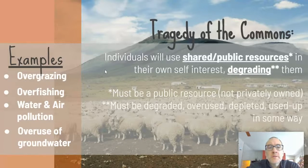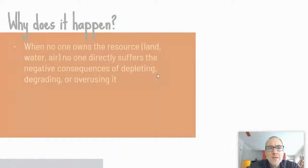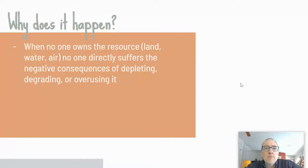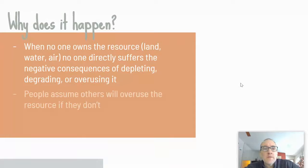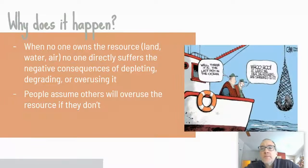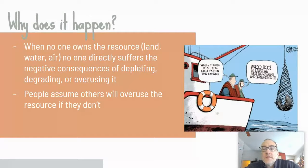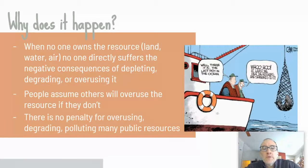Why does the tragedy of the commons happen? Well, no one owns the resource, and no one directly suffers the negative consequences of degrading or overusing it — there's nothing they have to pay as a consequence. People also assume that if they don't overuse it, someone else will: 'if it's not me, then it's someone else.' That's a classic mentality. And there's no penalty for overusing or degrading those public resources — as illustrated by the cartoon of catching the last fish in the ocean, saying 'at least we beat the Russians and the Spaniards to it.'